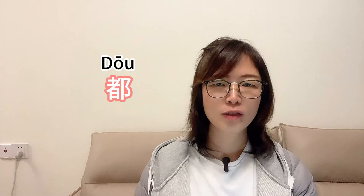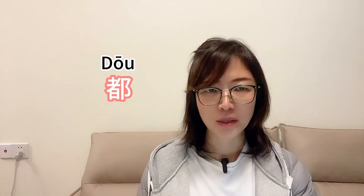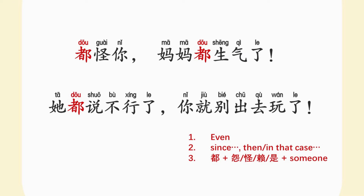After learning the three advanced uses of 都, let's go back to the sentences we mentioned at the beginning. 都怪你, 妈妈都生气了。 她都说不行了, 你就别出去玩了。 Regarding the above three uses of 都, you can pause now and choose the correct usage before seeing the answer.